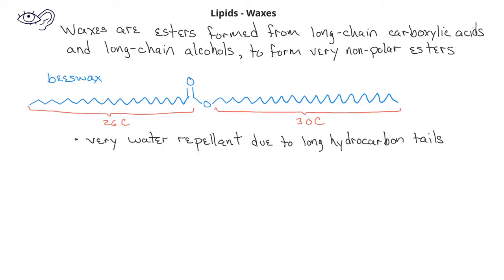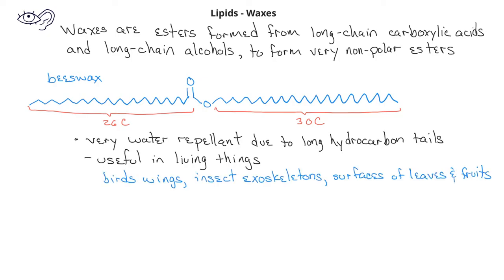This is a very useful property which makes waxes present in a number of living things. The feathers of birds are coated with wax to make their wings water repellent. Insects will often secrete a waterproof waxy layer on the outside of their exoskeletons. Waxes can also be found on the surface of certain leaves and fruits, where it serves as a protectant against parasites and minimizes the evaporation of water.